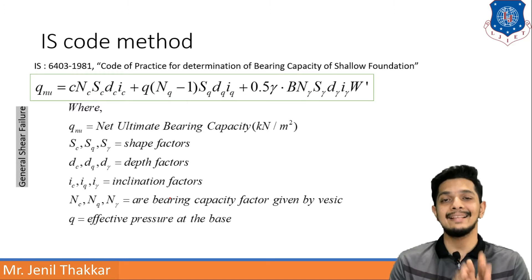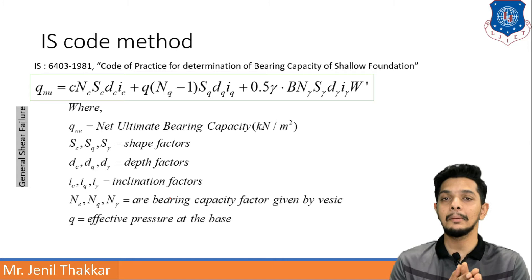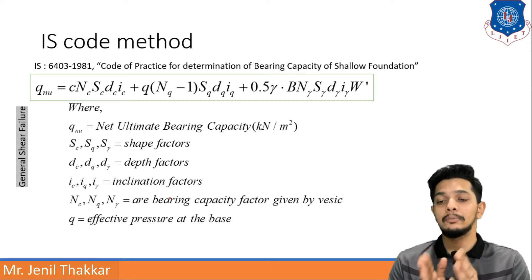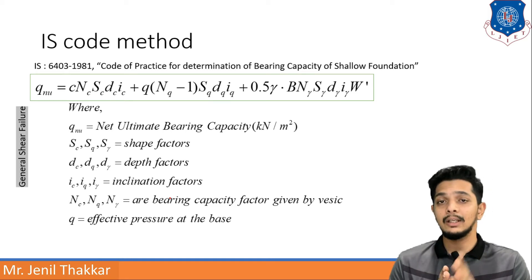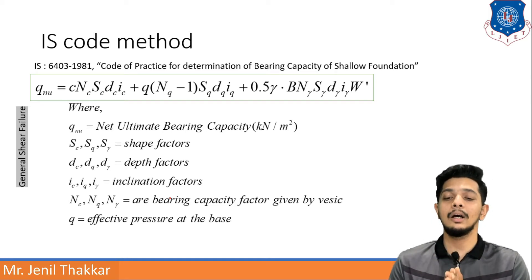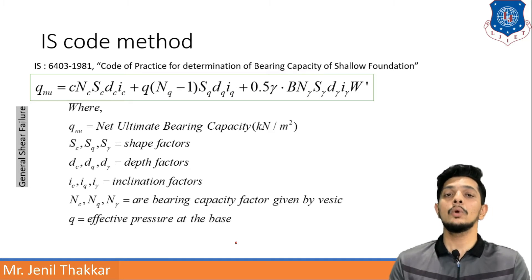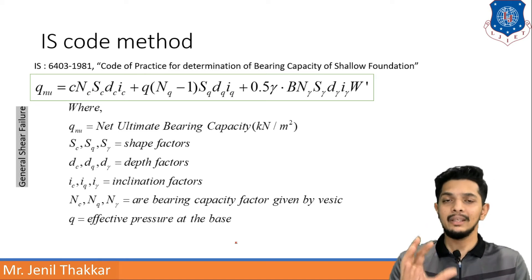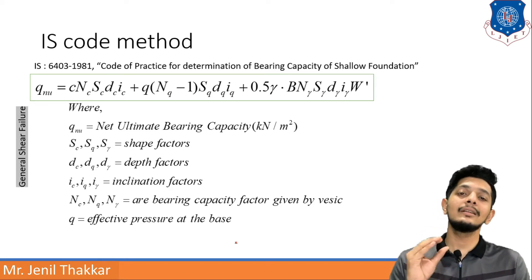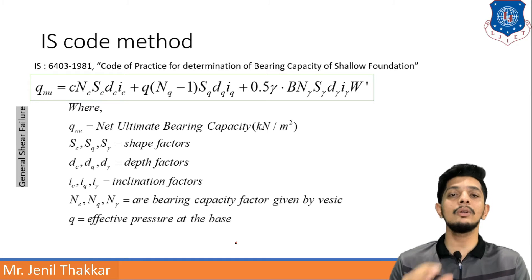In this formula: Sc, Sq, and Sγ are shape factors; dc, dq, and dγ are depth factors; ic, iq, and iγ are inclination factors; and Nc, Nq, and Nγ are bearing capacity factors given by Vesic. The term q is the effective overburden pressure at the base of the footing.